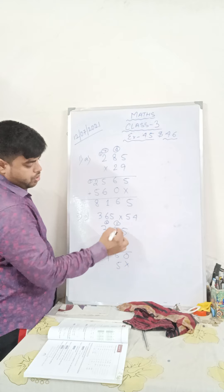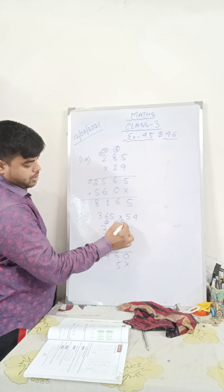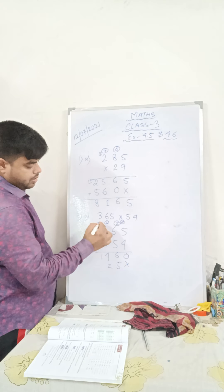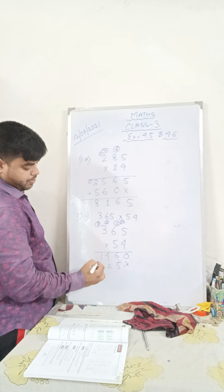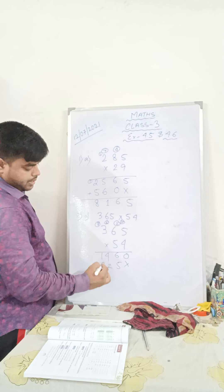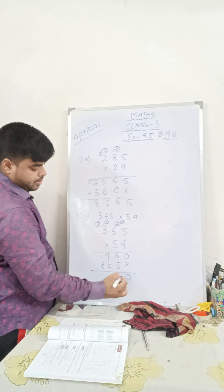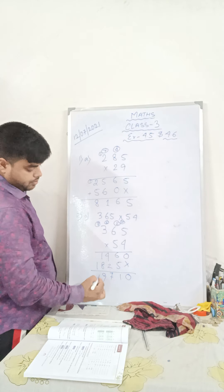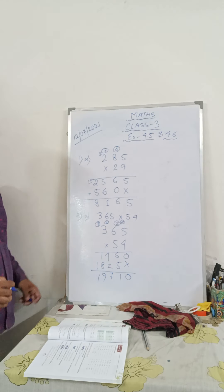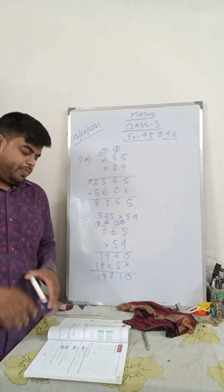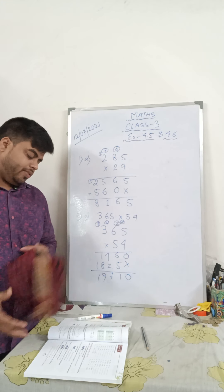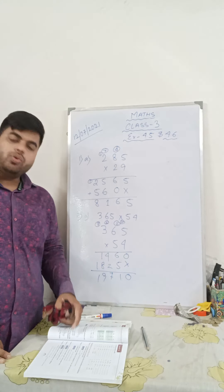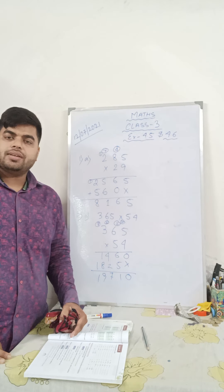5 fives are 25, 2 in hand. 5 sixes are 30 plus 2 is 32, 3 in hand. 5 threes are 15 plus 3 is 18. Now you add. This is how you have to do the sum. Please do exercise 4.5 in the copy and exercise 4.6 you can do in the book. It is very simple.